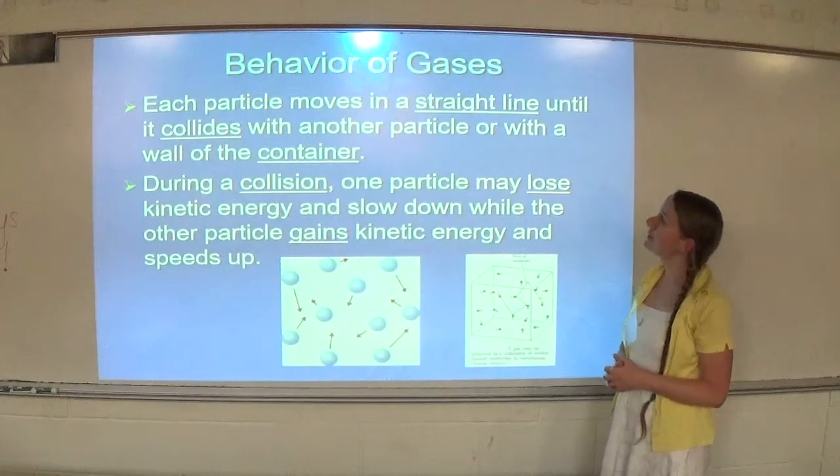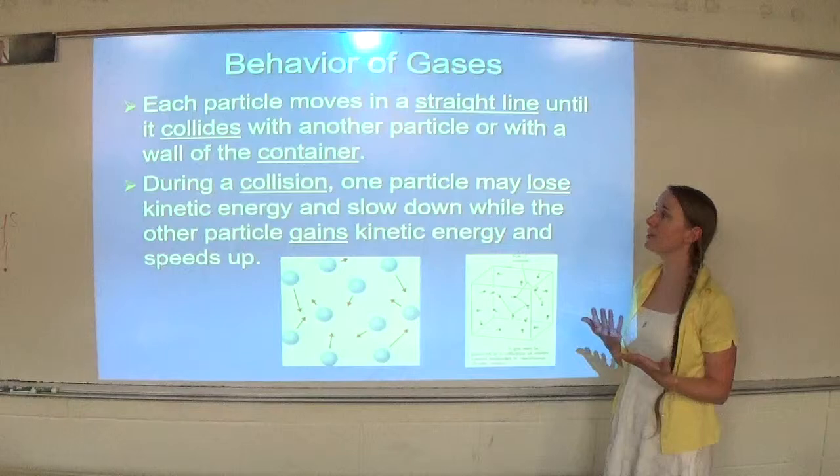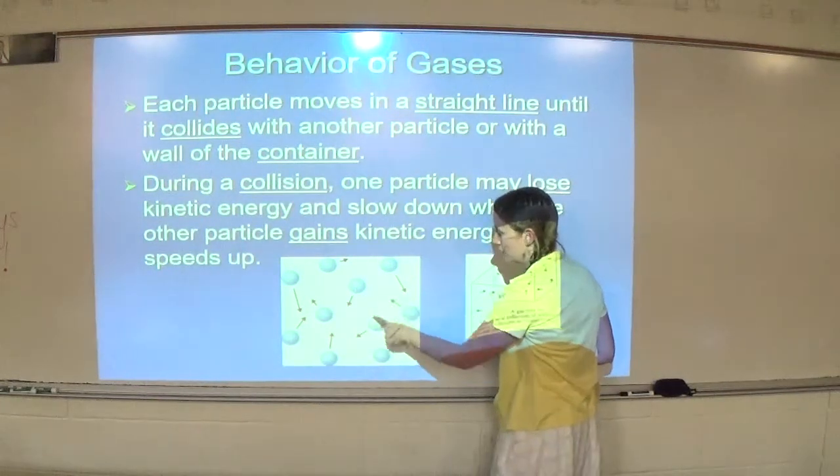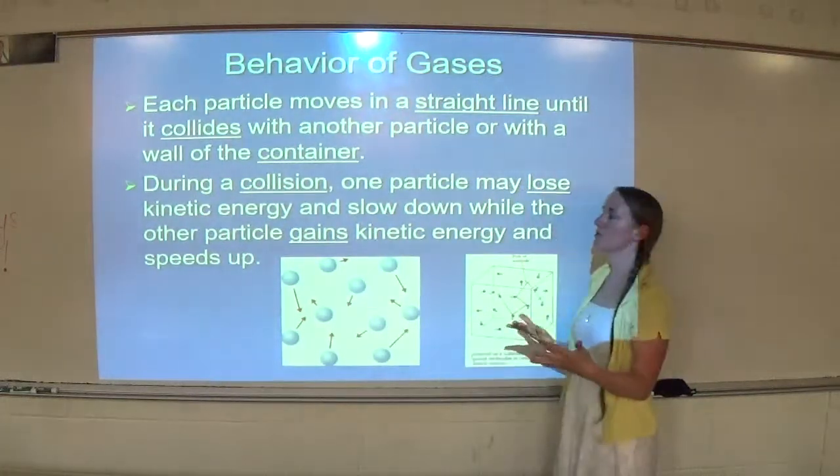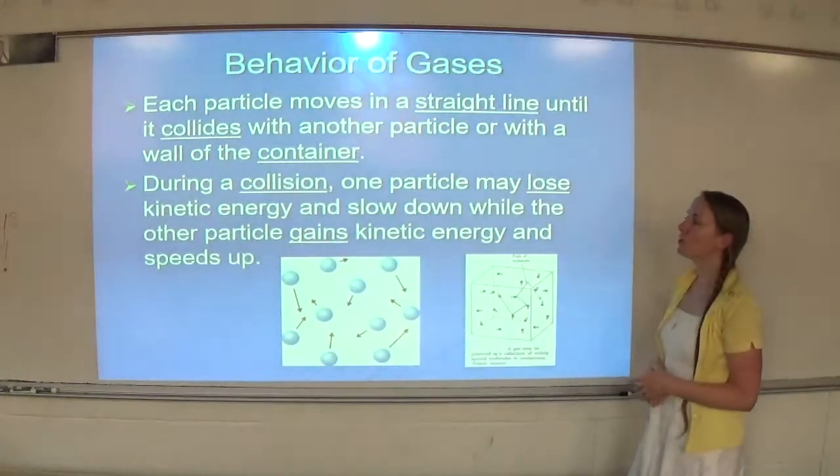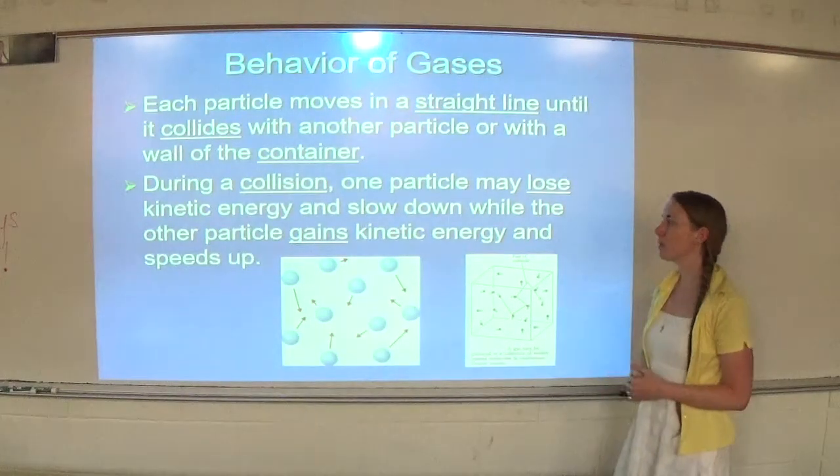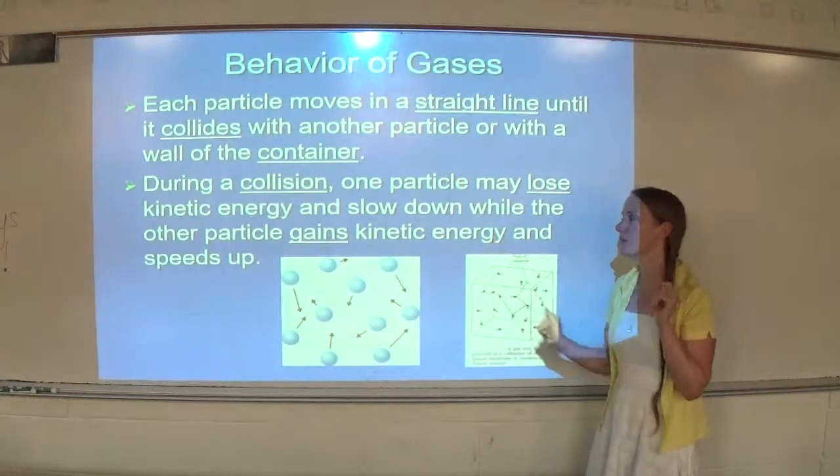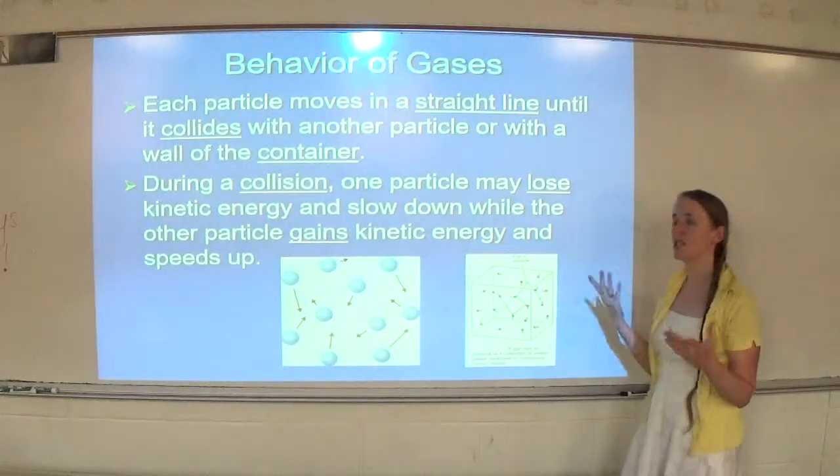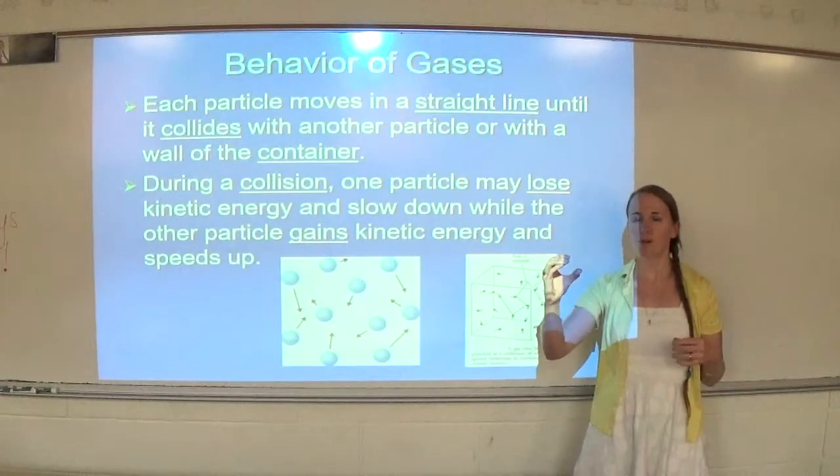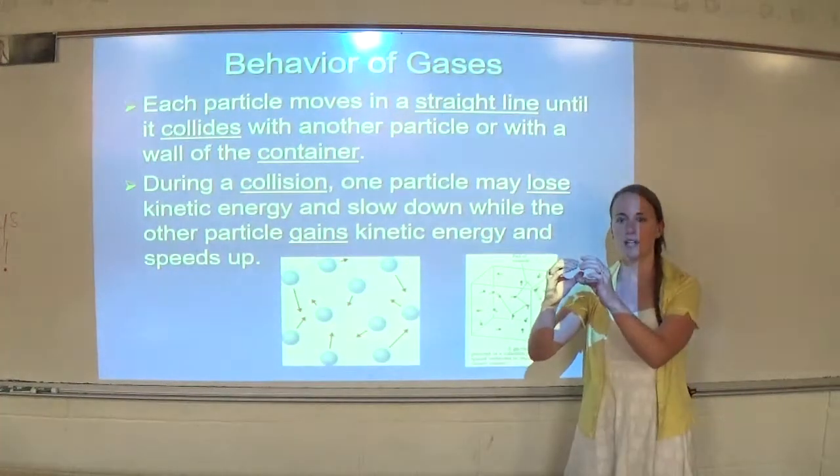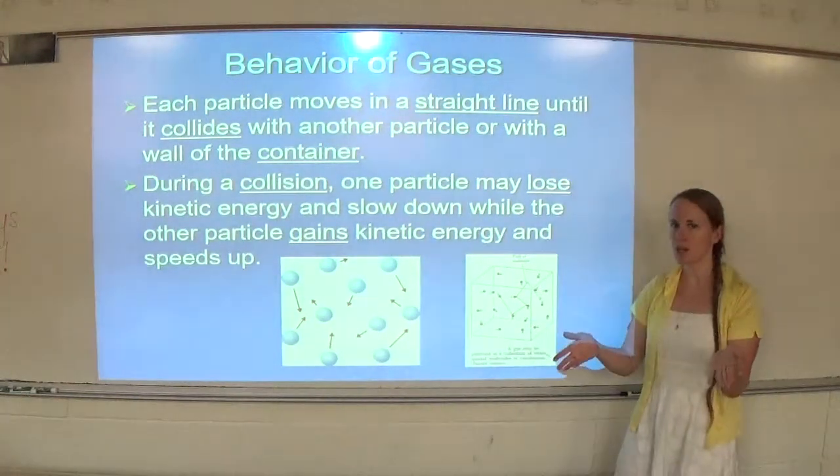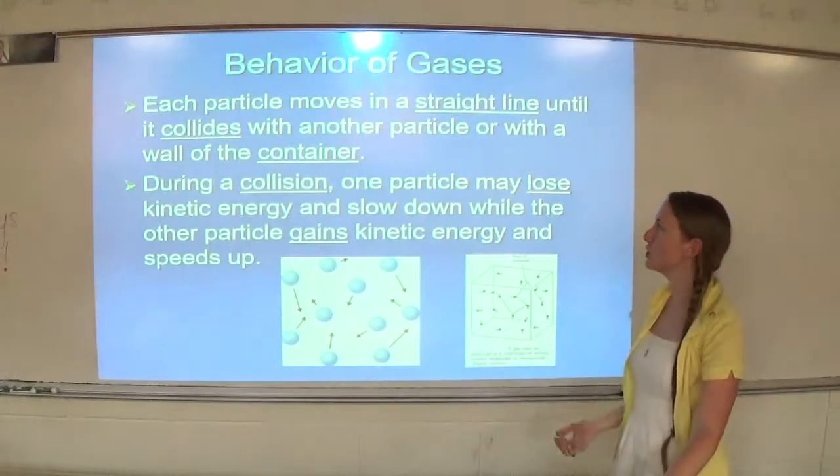Each particle moves in a straight line until it collides with another particle or with the wall of a container. The particle is going to hit, and then hit, and then hit. It's not going to be going around in curlicues. During a collision, one particle may lose kinetic energy and slow down, while another particle gains kinetic energy and speeds up. But, as we know about energy, law of conservation of energy. Total energy must remain the same. Think about a pool ball. You may have one still, and you hit one. Once they collide, this one starts moving, and now this one has stopped. Energy can be transferred. It can change forms and it can change location.